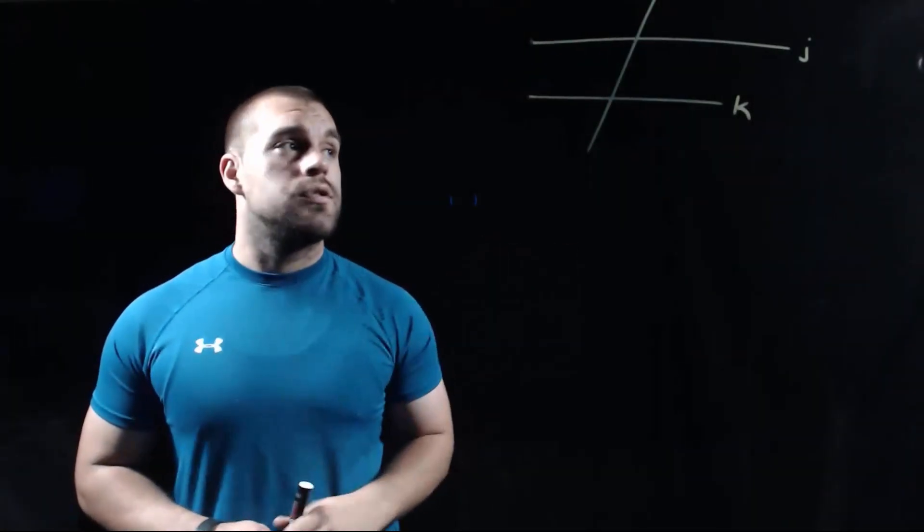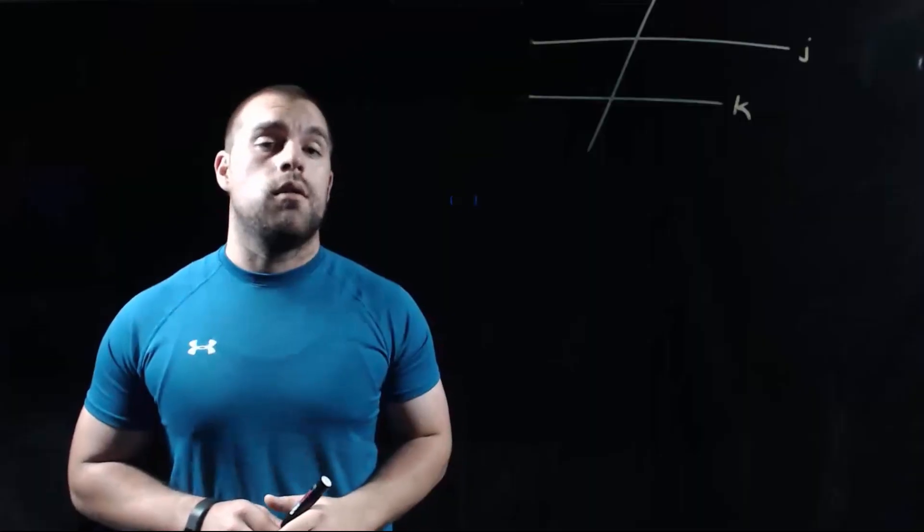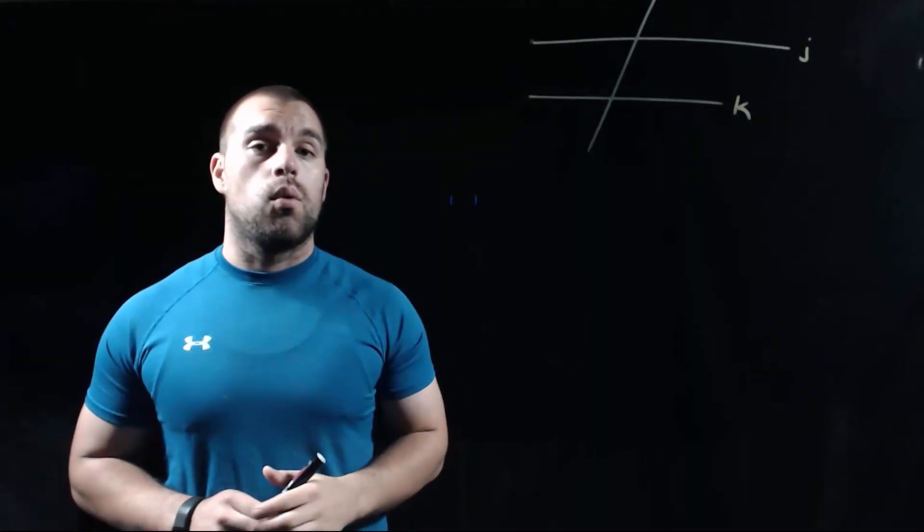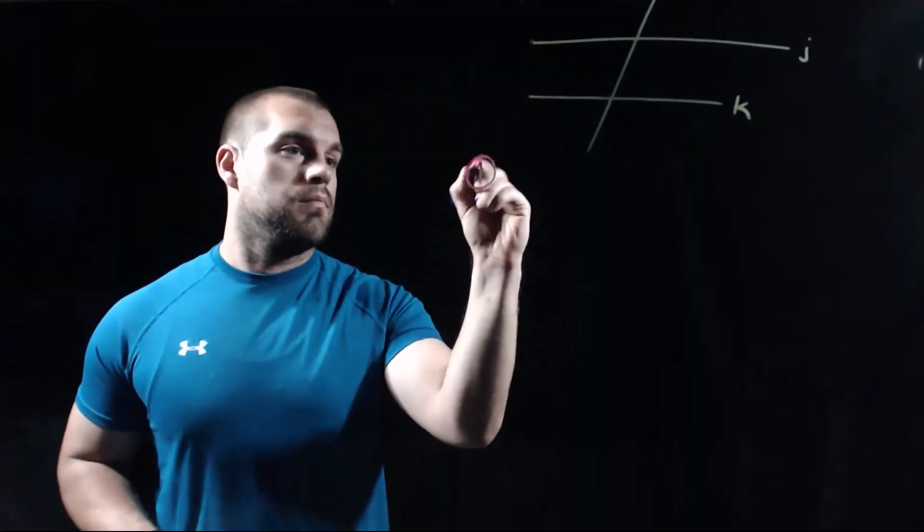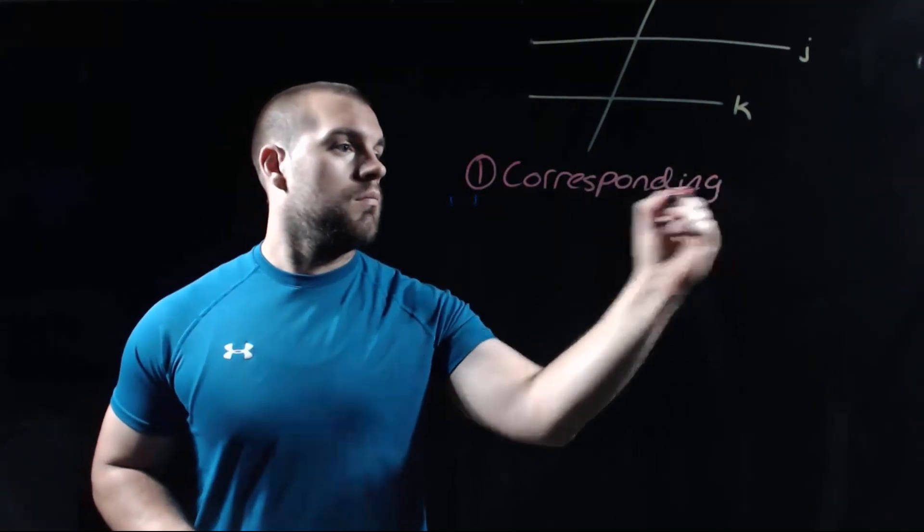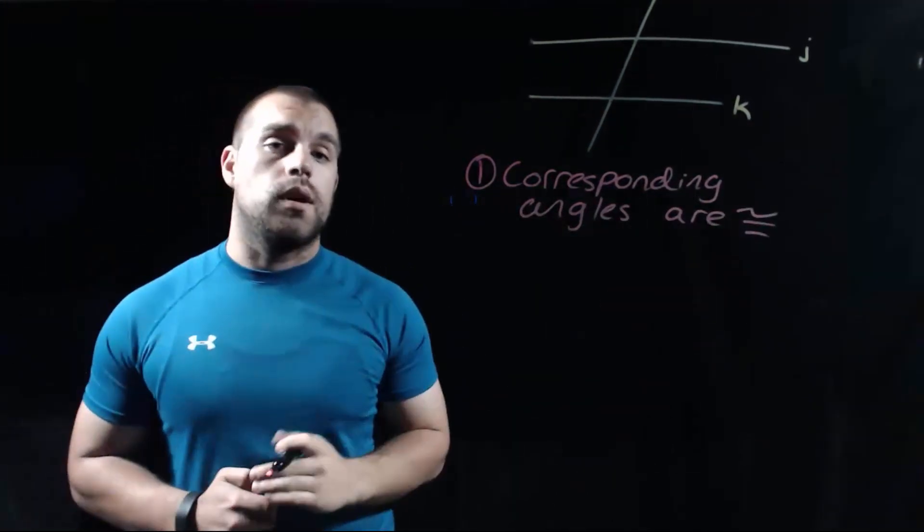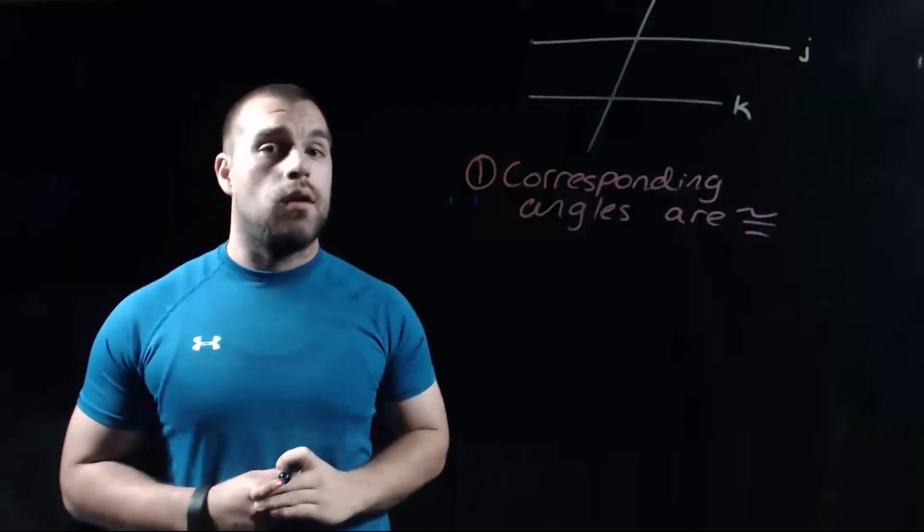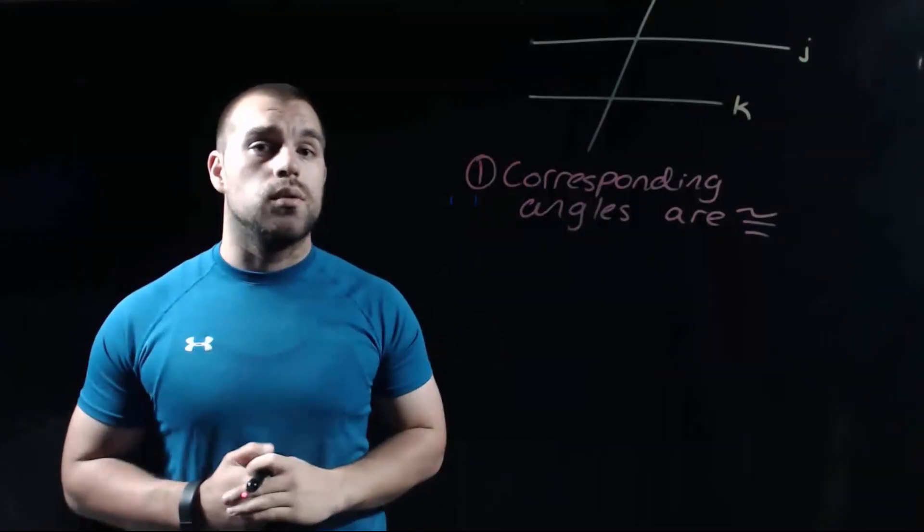If we're looking at these two lines, J and K, and we want to show that they're parallel to each other, we need to be able to show one of four things. The first thing that we could show is that corresponding angles are congruent. That'll make these two lines parallel.